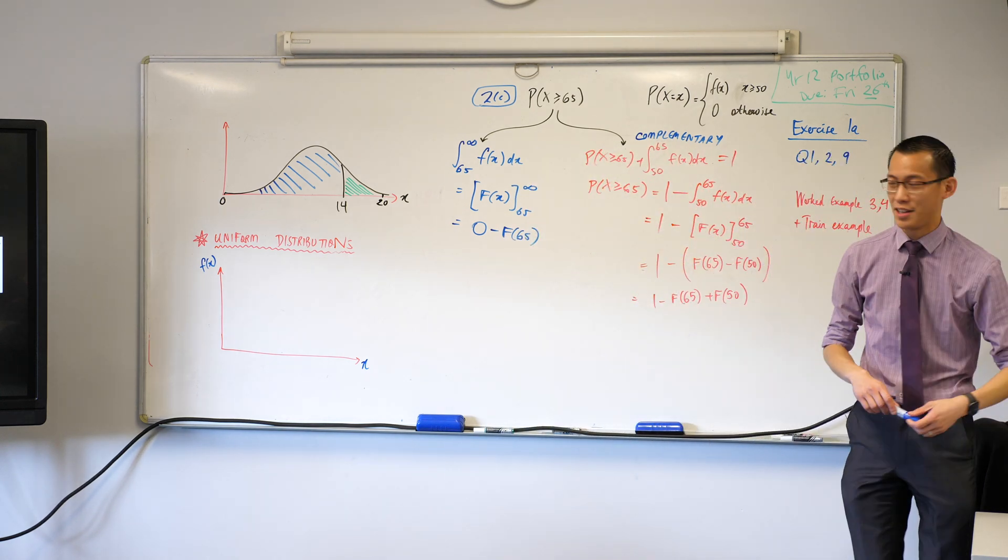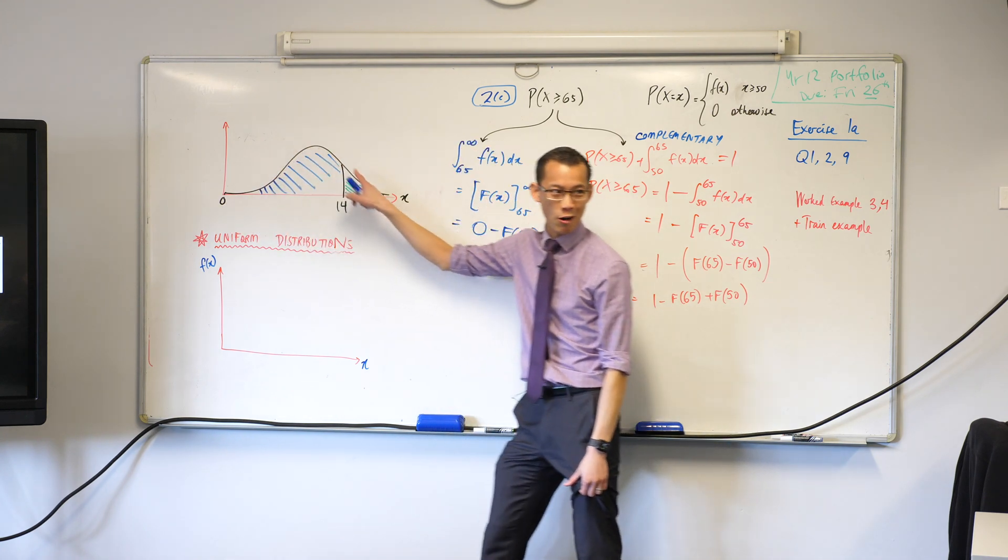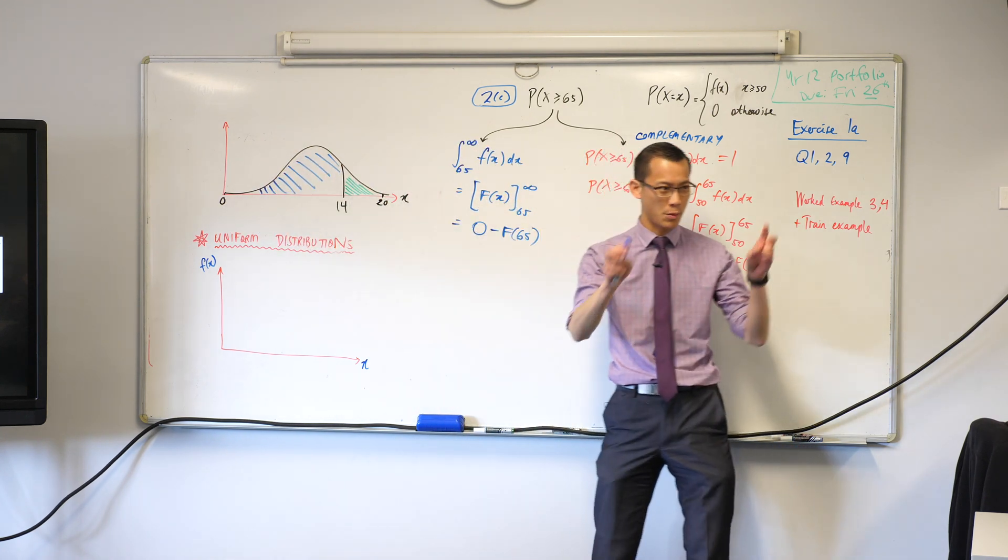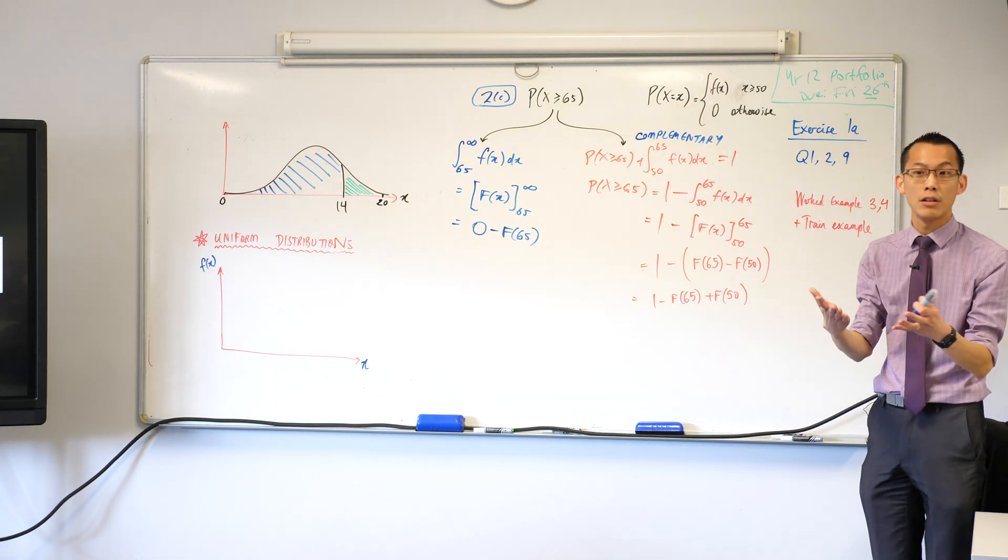We've so far been looking at probability density functions, pictures of them, that are interesting and unusual. Shapes like this that look like what we call the normal distribution, which we'll get to a bit later, or weird wonderful curves that do whatever you like.